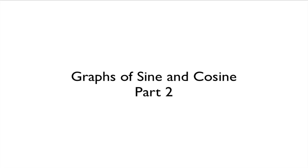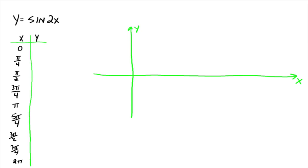Alright, this is part 2 for the graphs of sine and cosine. So let's graph y equals sine 2x. I've already got you started with some x values to put in there. So let's figure out what the corresponding y values would be.